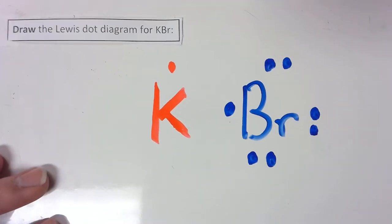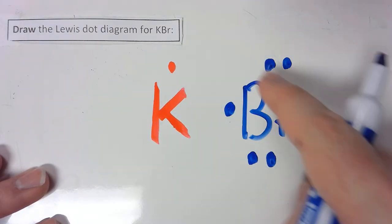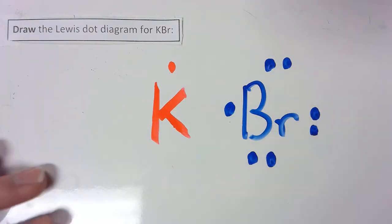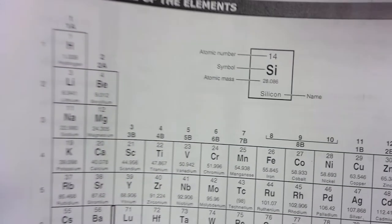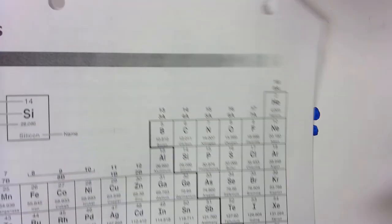Now you'll notice something. K has one extra electron. Br has seven and is missing one. And this actually works out really well because this is an ionic bond. We know this because K is a metal. Br is a non-metal.